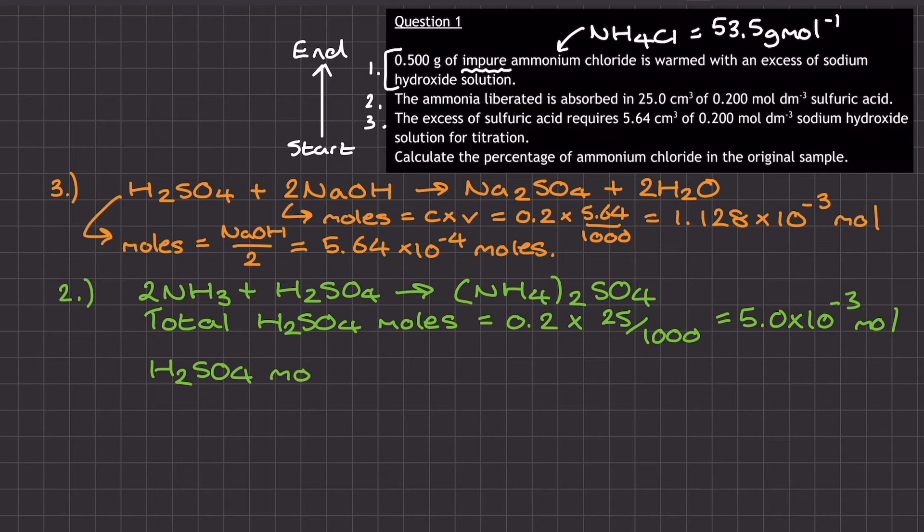Then what I need to do is subtract from this value the amount of sulfuric acid in moles that I've determined was left in excess after stage 2 took place. So that's 5 times 10 to the power of negative 3 minus 5.64 times 10 to the power of negative 4. And that means that the amount of sulfuric acid in moles that did react in stage 2 with the ammonia is 4.436 times 10 to the power of negative 3 mole.